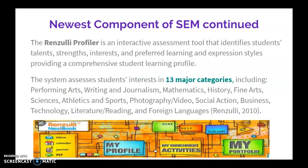This is the profiler — an interactive assessment that identifies everything a student would want. The system assesses these into 13 major categories, including performing arts, writing, journalism, math, history, fine arts, science, athletics, sports, photography, social action, business, technology, literature, and foreign language. This is a really all-inclusive database, but schools would have to pay for it. The database includes many different categories like virtual field trips and real field trips — an all-inclusive resource for schools and teachers interested in implementing this program.